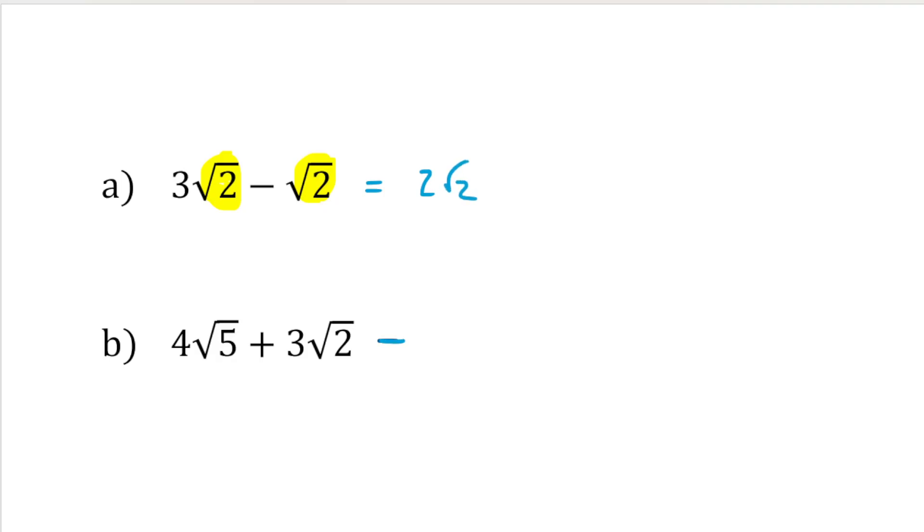And over here for b, if we've got 4 root 5 plus 3 root 2, well, these are different, aren't they? Root 5 is different to root 2. So we can't simplify this. This is just 4 root 5 plus 3 root 2.